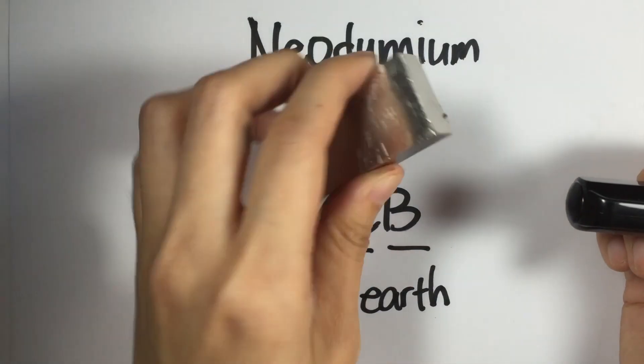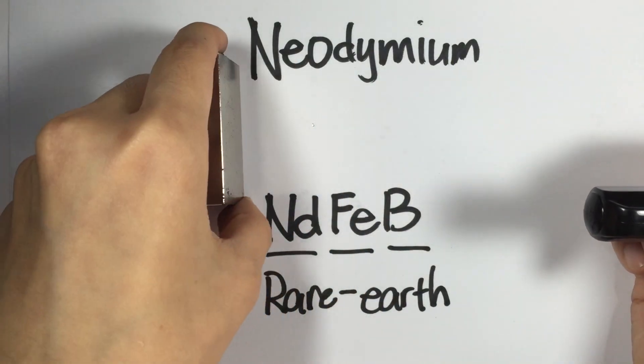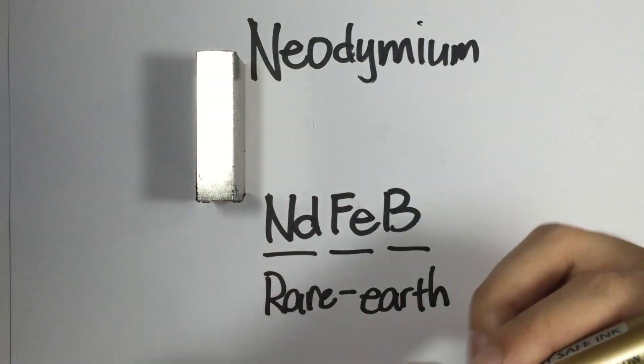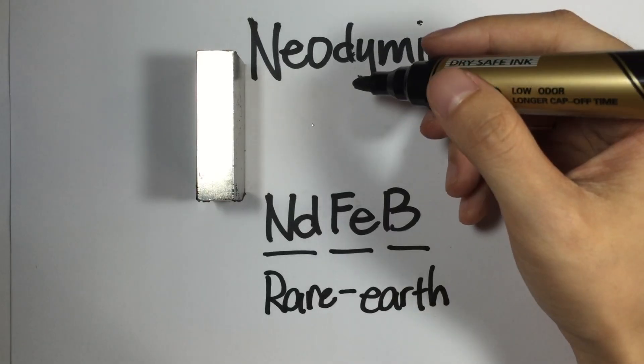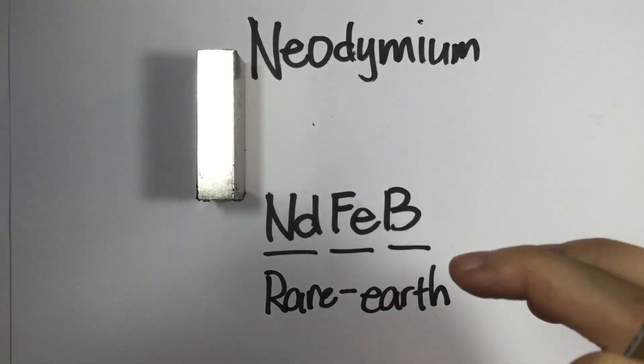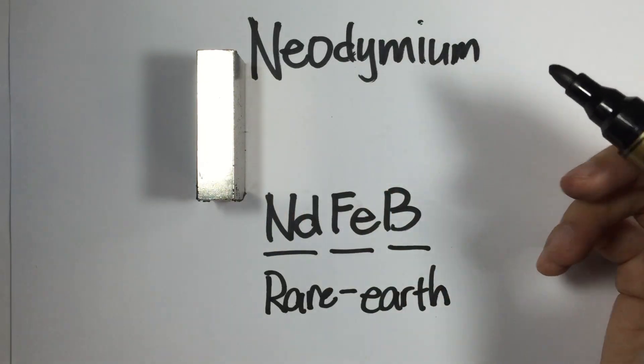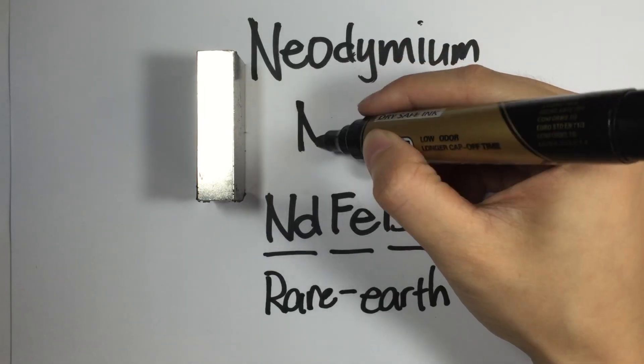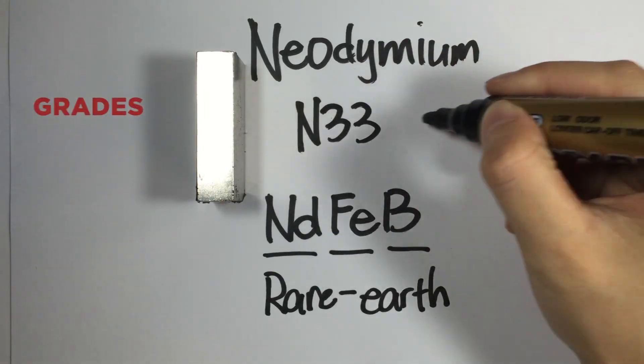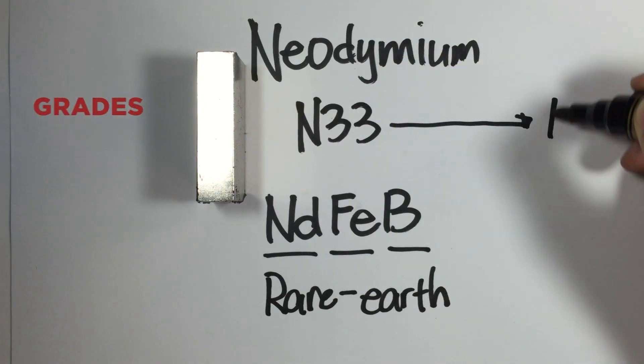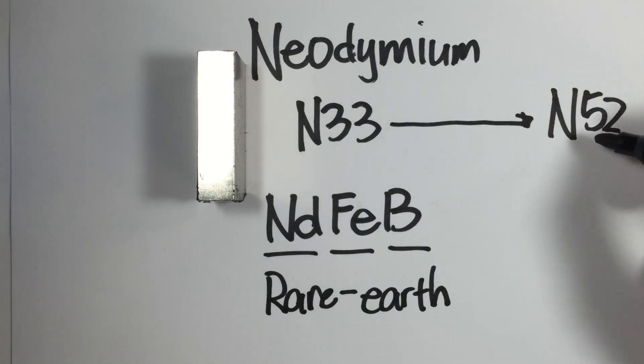So how strong is this magnet? We're going to cover that in a different video. But for this video, I'll give you an idea, in terms of grade, how strong it is. So the grades available are from N33 until N52. This is the weakest available magnet and the strongest grade available.